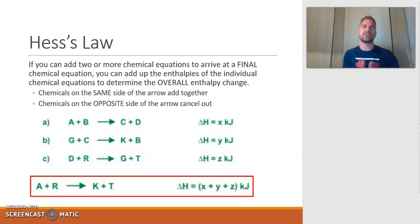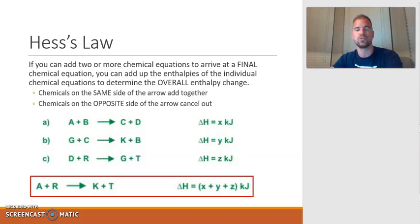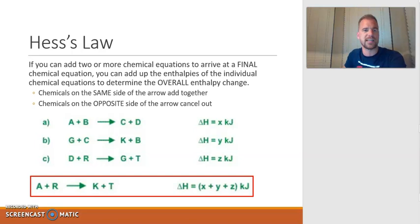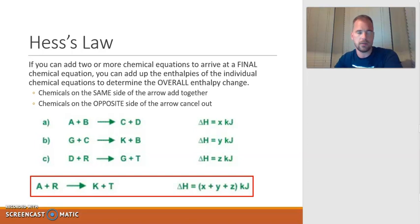Here is essentially the essence of Hess's law. Hess's law states that if you can add two or more chemical equations to arrive at a final chemical equation, you can also add up the enthalpies of those chemical equations to determine the overall enthalpy. So essentially, if you take these three chemical equations with their respective changes in enthalpy, and there's a way to add them up to get one overall equation, you can also add up these enthalpies to get an overall enthalpy.